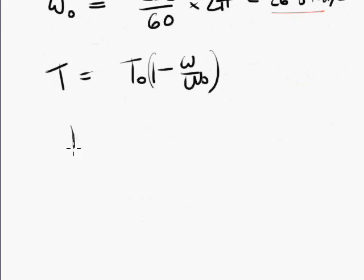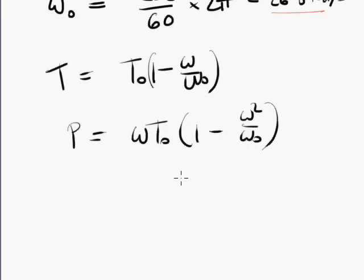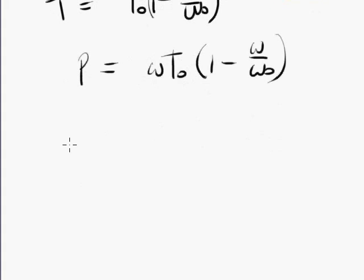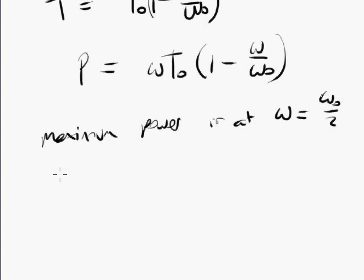Now, and our power, our power is omega T zero, one minus omega squared over omega zero. That's completely wrong. Our power is just omega times all of that. Now, so according to our derivation that we did a few minutes ago, the maximum power is at a speed equal to half of our maximum speed.